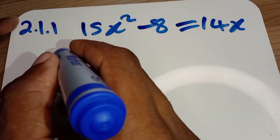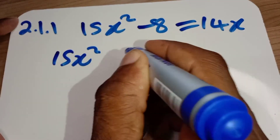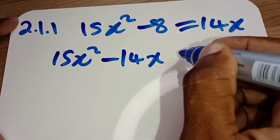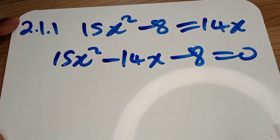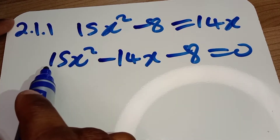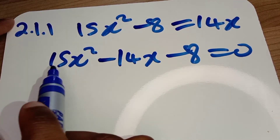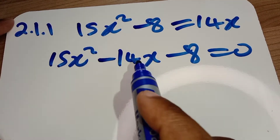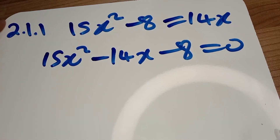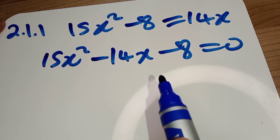I will arrange it in standard form: 15x squared, and when it comes to this side we are going to have negative 14x, negative 8x. I have arranged it in standard form whereby we have a, b and c — a is the coefficient of x squared, b is the coefficient of x, and c is the constant.